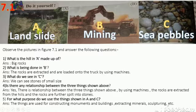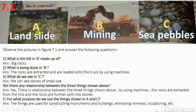In picture A, it is a landslide. Landslide means it is a movement of rocks or soil sloping down due to rain and other factors that lead to a landslide. A landslide is a natural calamity.